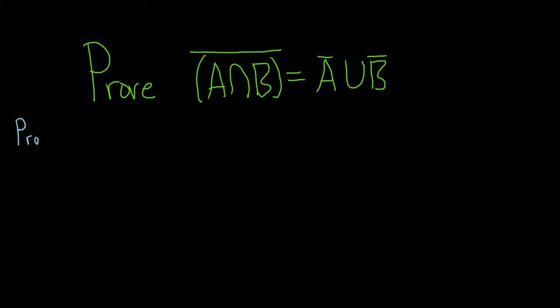This is one of DeMorgan's Laws, so there's two statements for DeMorgan's Law. This is one of them. By the way, this bar here means absolute complement, so this symbol, a bar, is the same as a complement.